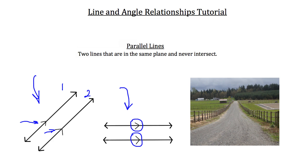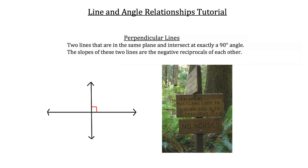Now let's talk about perpendicular lines. Perpendicular lines are two lines that are in the same plane and intersect at exactly a 90 degree angle. The slopes of these two lines are the negative reciprocals of each other. Take a look at the example on the bottom left — we'll call this line 1 and the vertical line line 2. You can tell that these two lines intersect at a 90 degree angle because we've drawn in that red box that indicates a 90 degree angle in geometry.